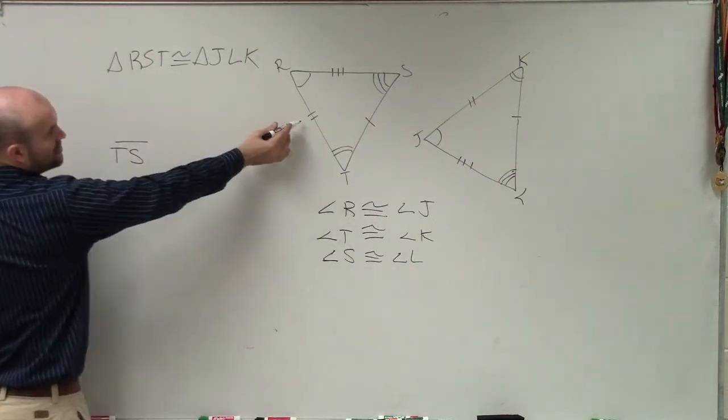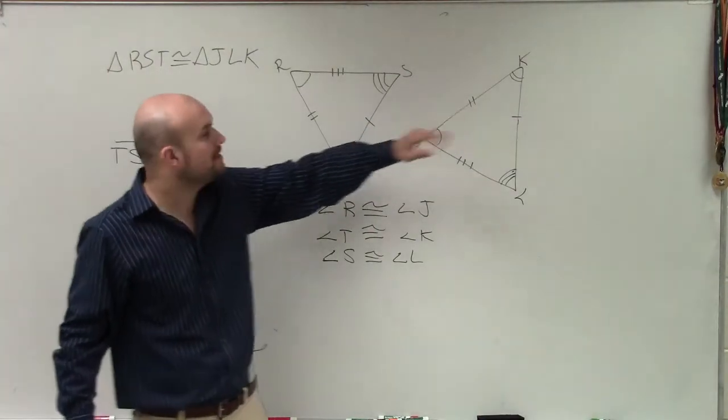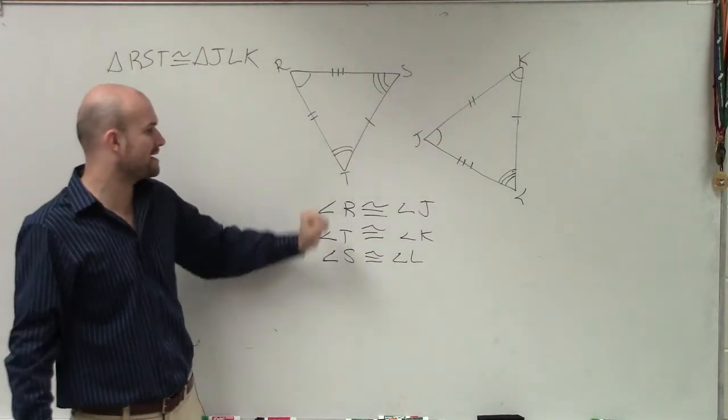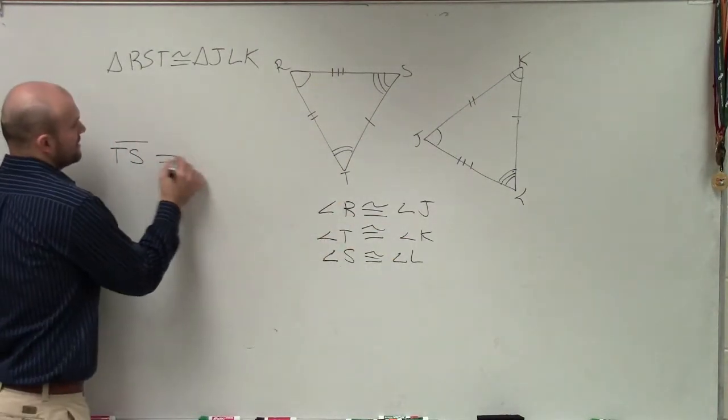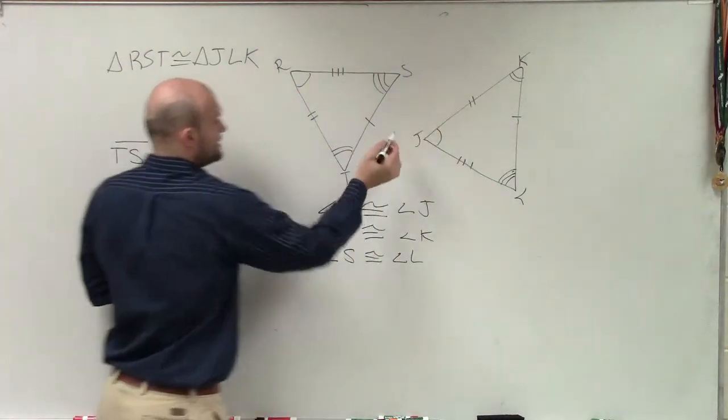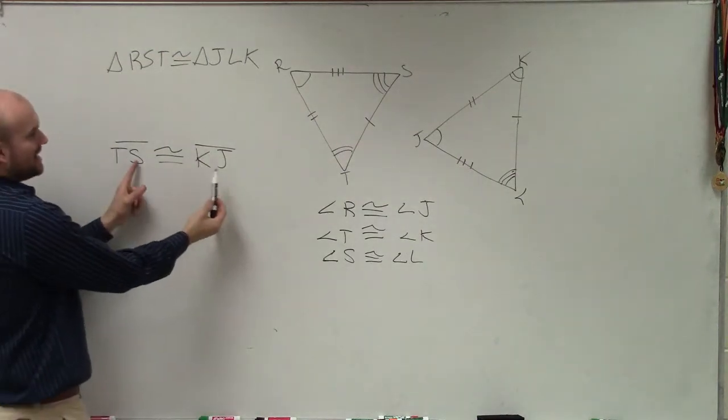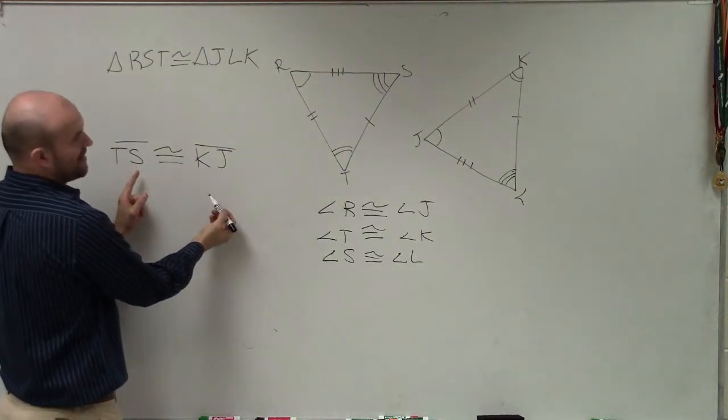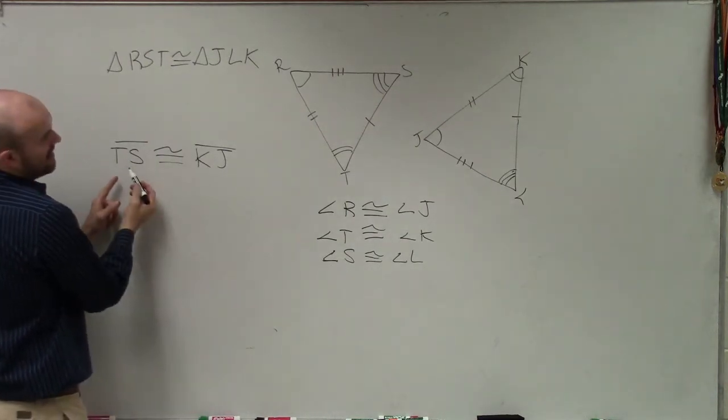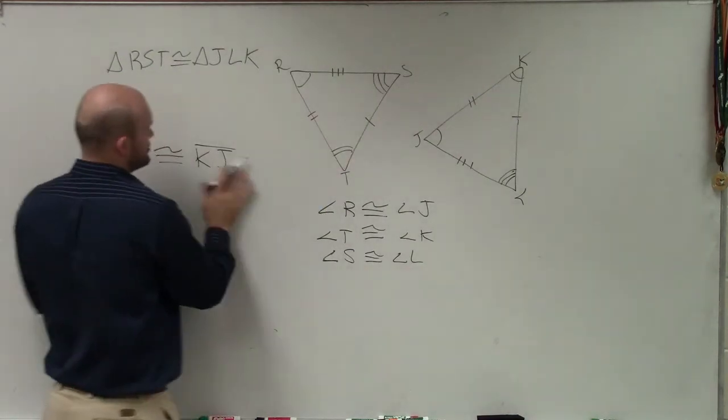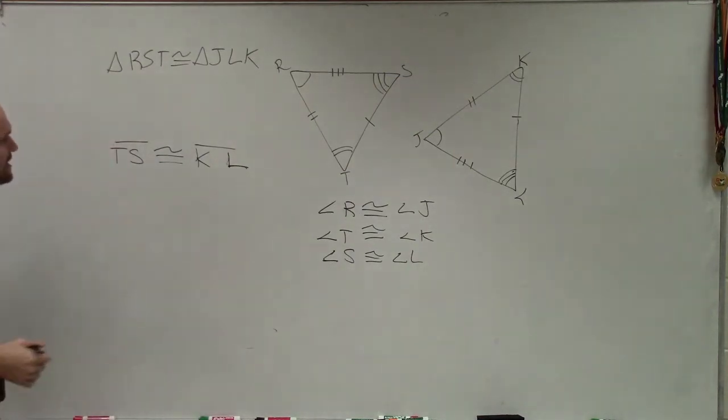So we have TS. That has two tick marks, which is going to be equivalent to - but remember, we have to go in the same part as our corresponding parts. Since T corresponds to K, I'm going to say this congruent part is going to be K to J. Right? Because T corresponds with K, and S corresponds with L, which L is not there. So let's go back and see. S corresponds to L. Very good. So TS is right there, so that should be L, not J. Already making some mistakes. So it should be TS is corresponding to KL.